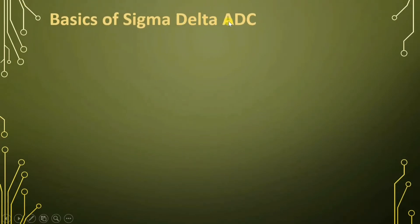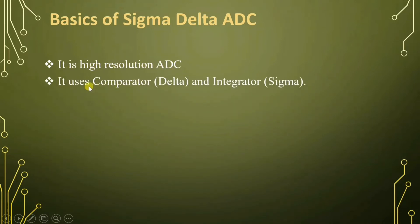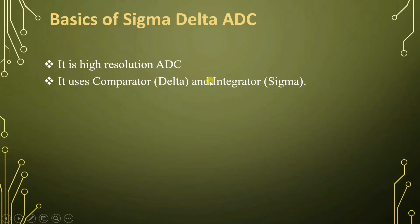When we talk about Sigma Delta ADC, it is a very high resolution ADC. It uses a comparator and an integrator — the comparator is referred to as Delta and the integrator is referred to as Sigma. Integrator means summation, which is Sigma, and the comparator provides difference, which is Delta. So based on comparator and integrator, its name is Sigma Delta.